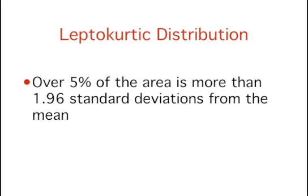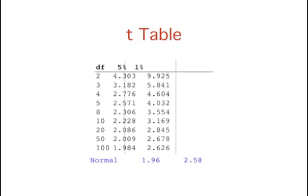This means that the t-distribution is leptokurtic. Because the t-distribution is leptokurtic, over 5% of the distribution is more than 1.96 standard deviations from the mean. This table shows the number of standard deviations from the mean beyond which remains 5% and 1% of the area. Note that these values are different for different degrees of freedom. The fewer the degrees of freedom, the farther you have to go in both directions to contain 95% of the area and thus leave 5%. For example, you have to go 4.3 standard deviations in both directions for 2 degrees of freedom, and less than 2 standard deviations for 100 degrees of freedom.